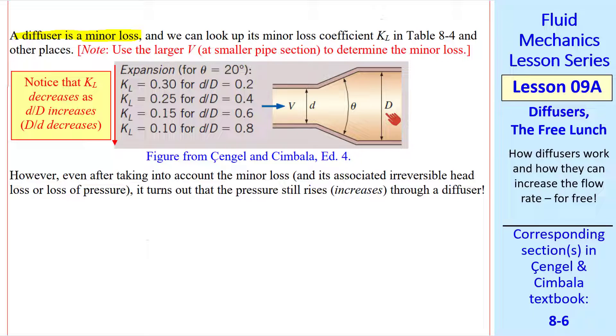Here's an example for theta equal 20 degrees. As D over capital D increases, or capital D over D decreases, KL also decreases.